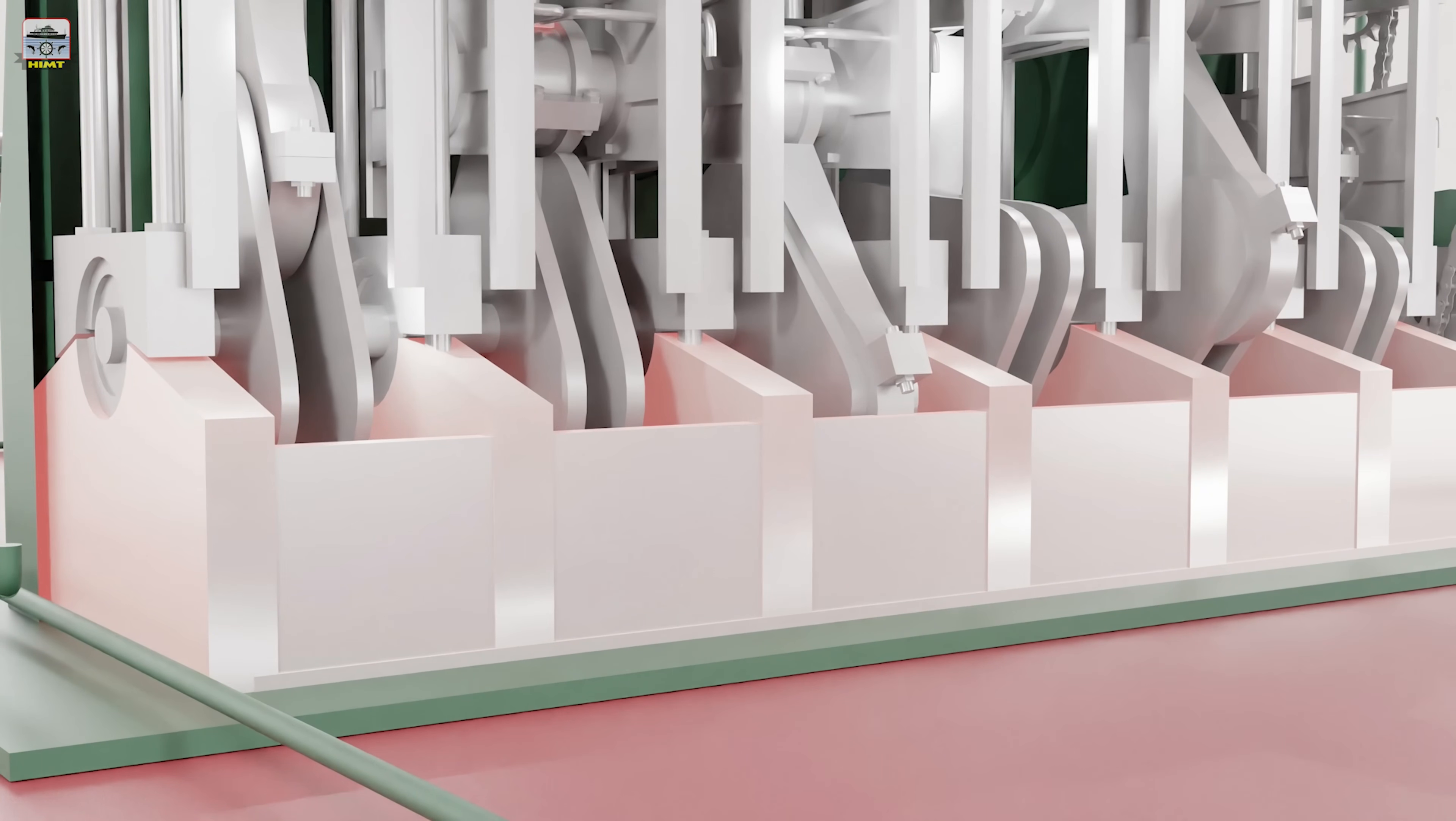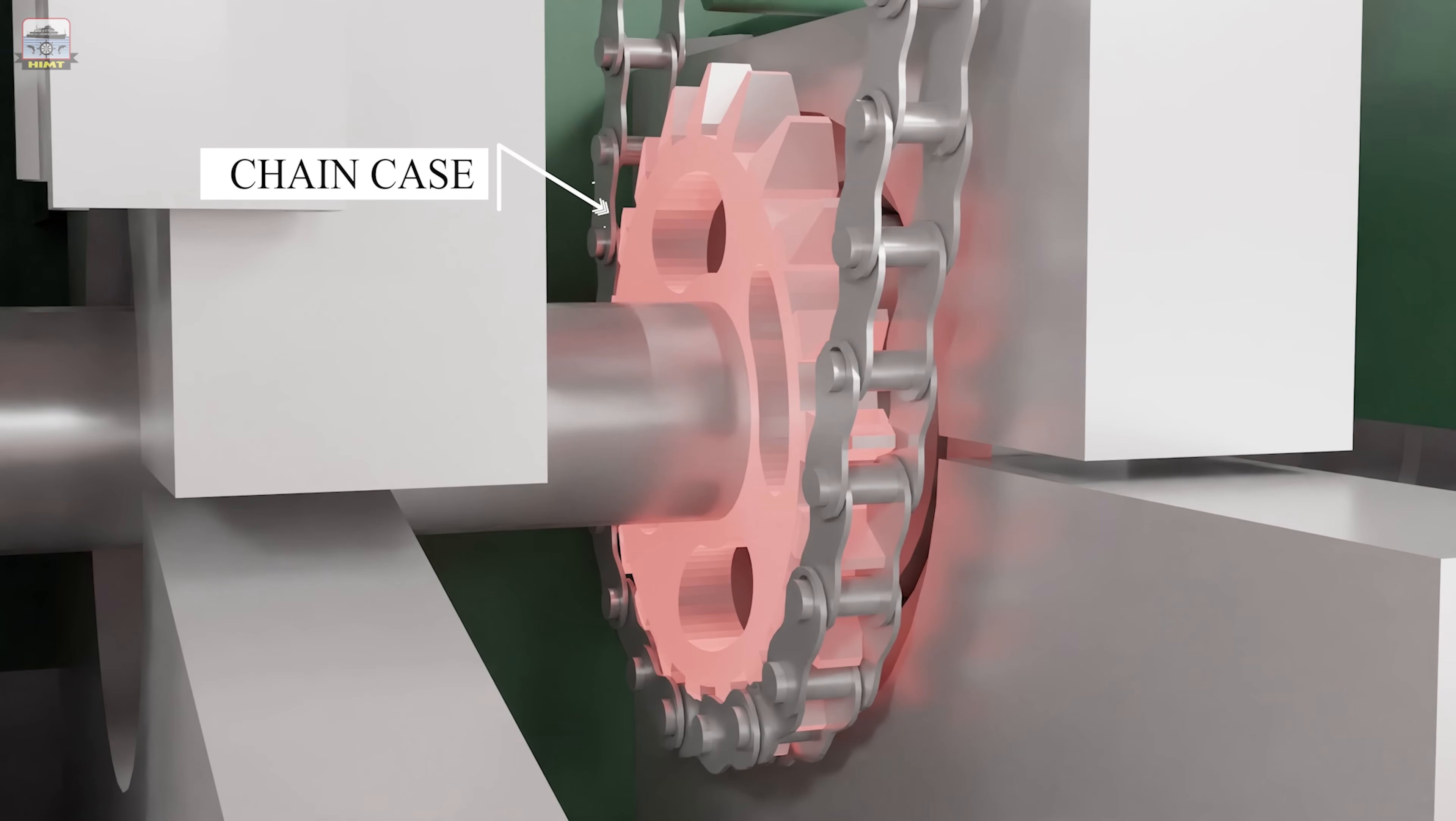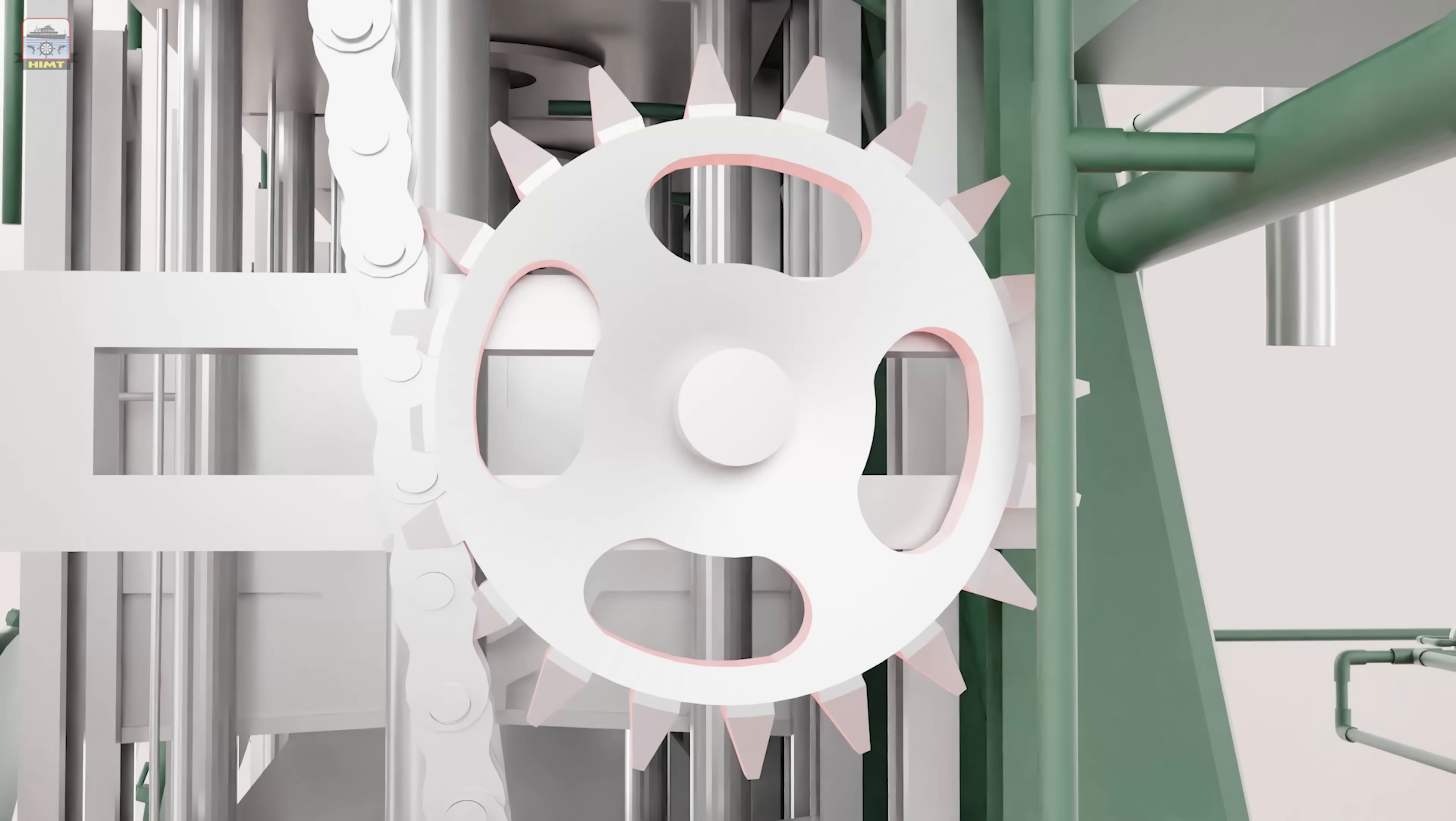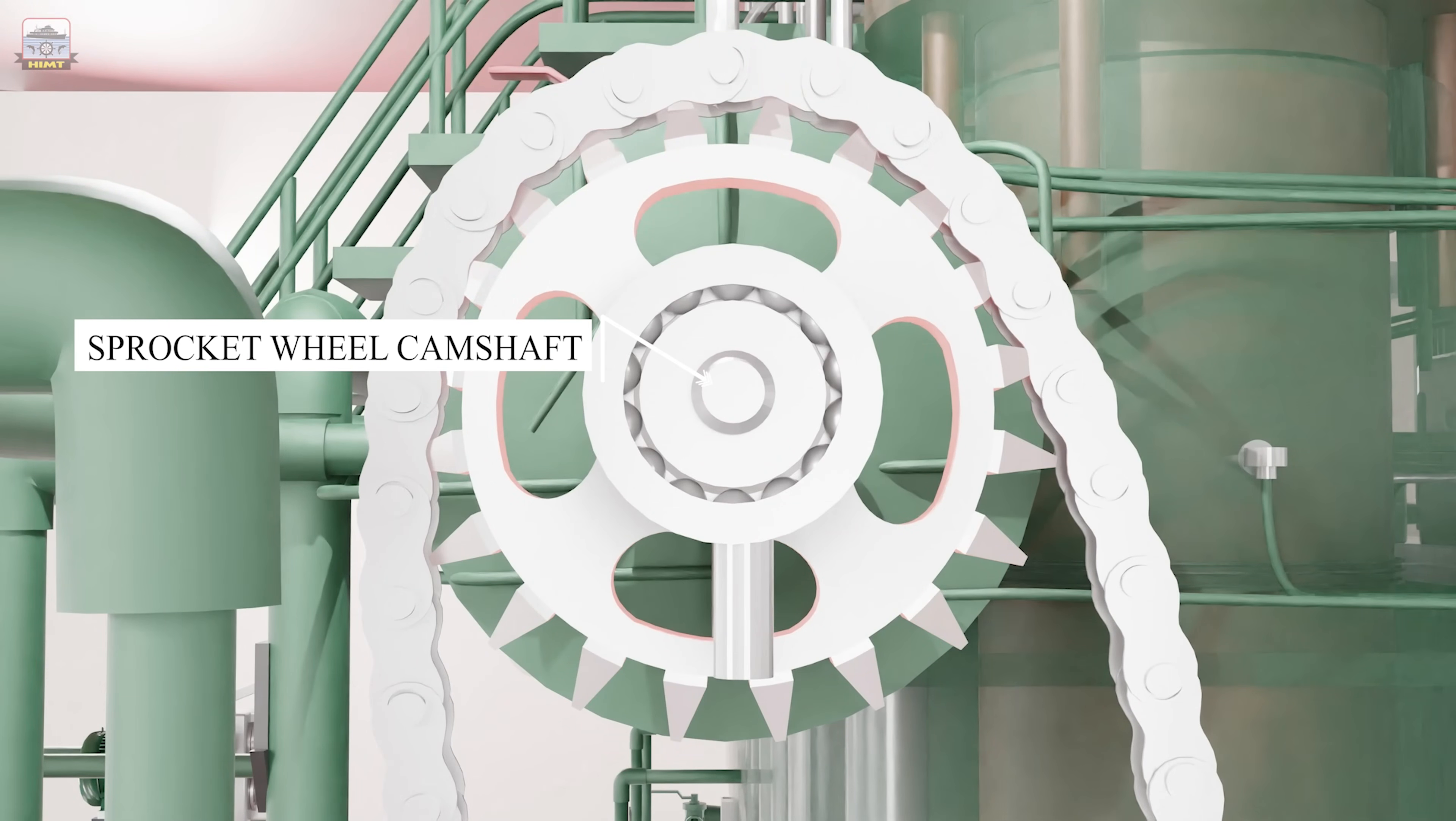The mechanical power transmission from crankshaft to camshaft is carried out in chain case. The chain drives give more flexibility in location of the camshaft, as well as ease of repair replacement of parts at a lower cost. The chain runs over the sprockets wheel fitted on the crankshaft, the idler sprocket wheel which is provided to adjust the tension of the chain, and on the sprocket wheel fitted on the camshaft.